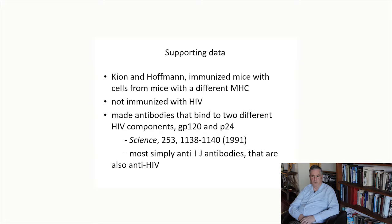We have supporting data from a paper published in Science in 1991, where Tracy Kyan and myself found that mice immunized with cells from mice with a different MHC, but not immunized with HIV, made antibodies that bind to two different HIV components: GP120 and P24. The interpretation is that these antibodies are most simply anti-IJ antibodies that are also anti-HIV.